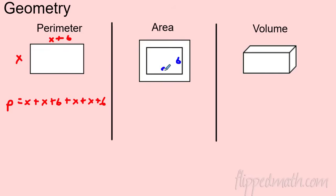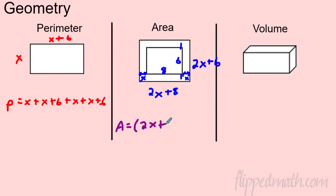For area, the classic problem: you have a 6 by 8 picture with a border of width x. The new dimensions become (2x + 8) by (2x + 6). When you multiply those together and FOIL, you get an x-squared term — so area problems produce quadratic functions.